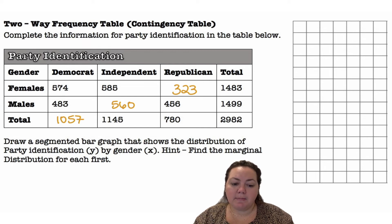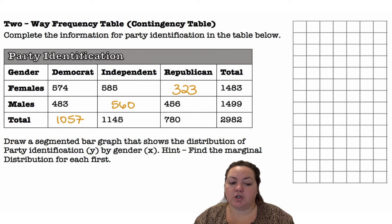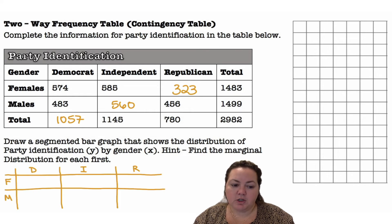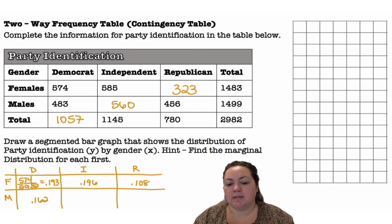Draw a segmented bar graph to show the distribution of party identification (Y) by gender (X). First, find the marginal distributions. Out of the table total of 2,982, we're going to take each cell value and divide by 2,982. For example, female Democrats: 574 out of 2,982 gives 0.193, or 19.3 percent.